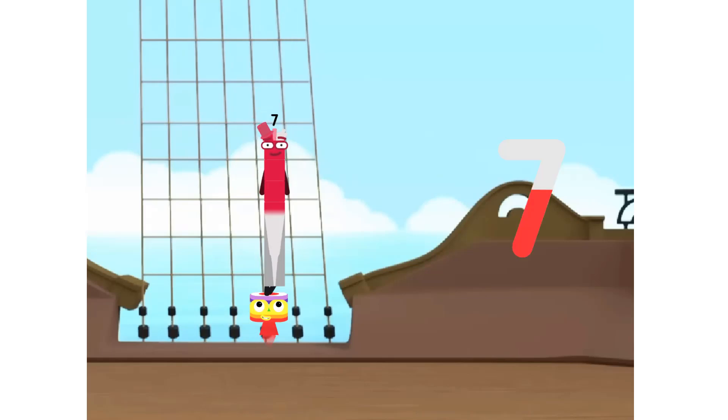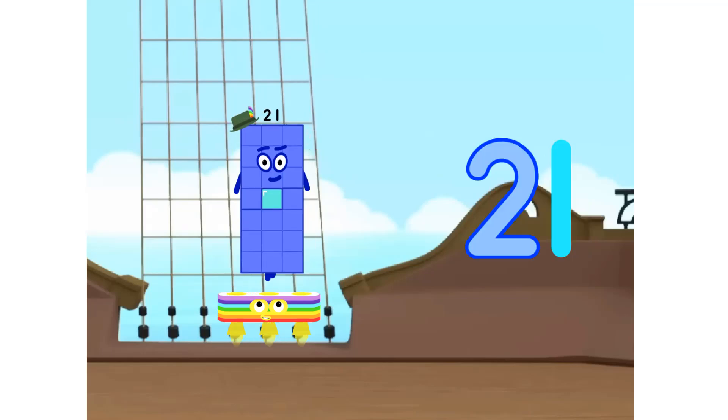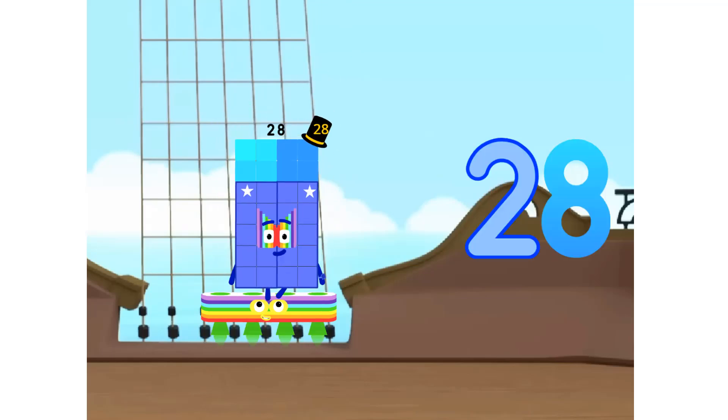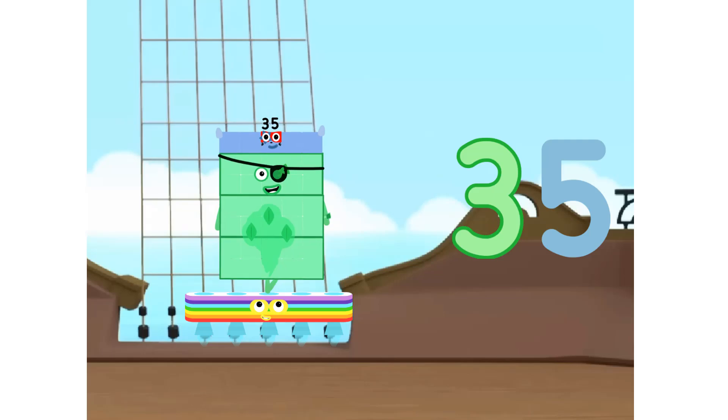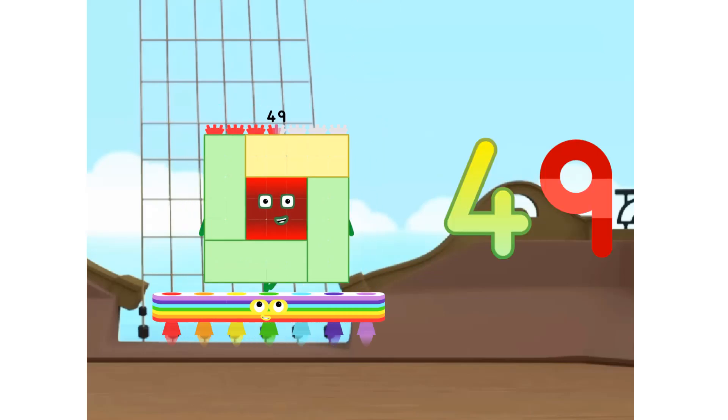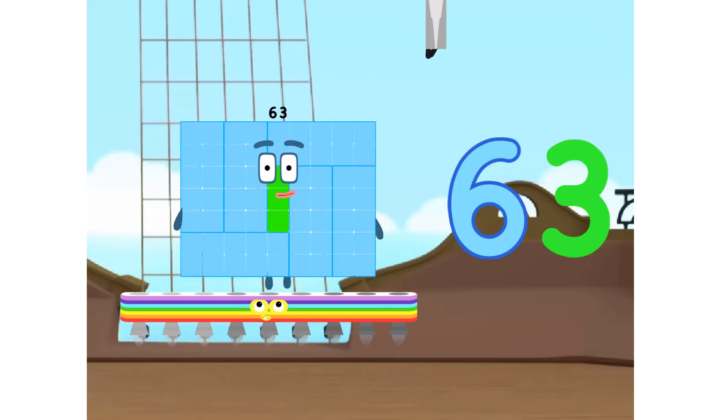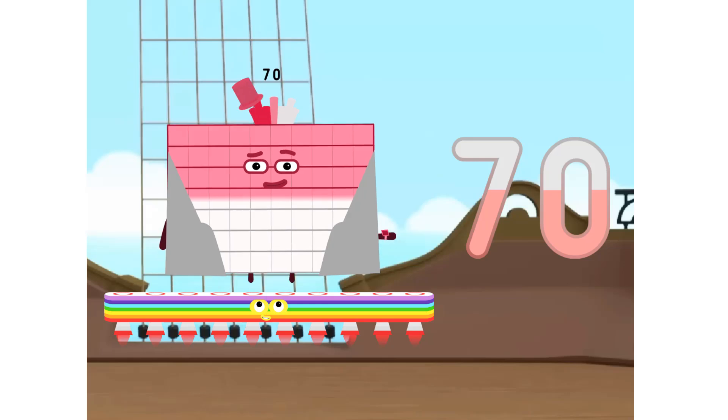1 times 7 is 7, 2 times 7 is 14, 3 times 7 is 21, 4 times 7 is 28, 5 times 7 is 35, 6 times 7 is 42, 7 times 7 is 49, 8 times 7 is 56, 9 times 7 is 63, 10 times 7 is 70.